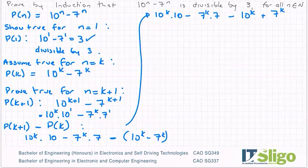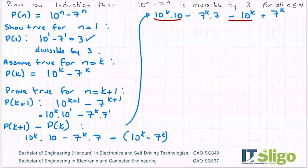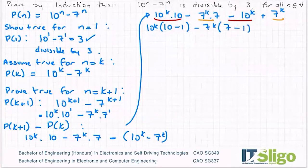Let's factor out 10 to the power of k. Let's group some of these together. So that is 10 to the power of k times 10 minus 1. And then I'm going to factor out 7 to the power of k from these two terms. 7 minus 1. It has to be minus here because I took the minus outside so minus by minus would give me that plus.